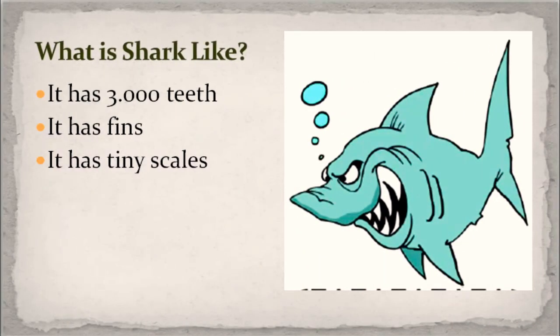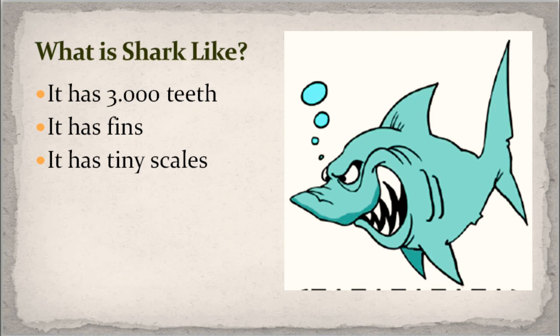And the last one is shark — it's not a baby shark, but it's a shark! It has 3,000 teeth — giginya berjumlah 3,000. And it has fins — memiliki sirip. It has tiny scales — memiliki sisik yang kecil atau lembut, karena shark adalah jenis ikan, not like a dolphin yang adalah mammal. Shark memiliki sisik.